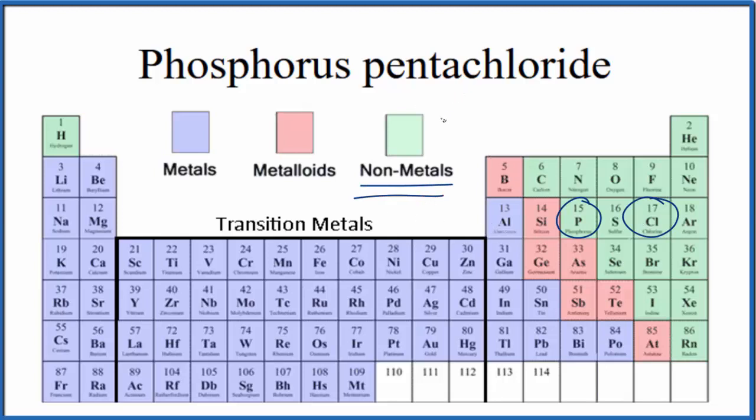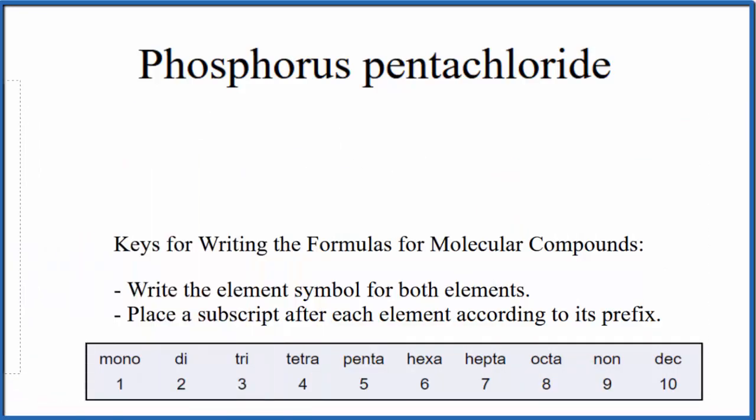That means phosphorus pentachloride is a molecular compound, sometimes called a covalent compound. We're going to use these rules to write the formula for phosphorus pentachloride.